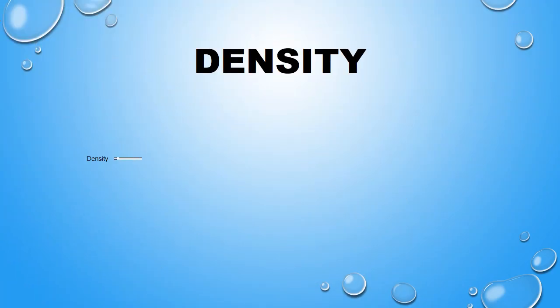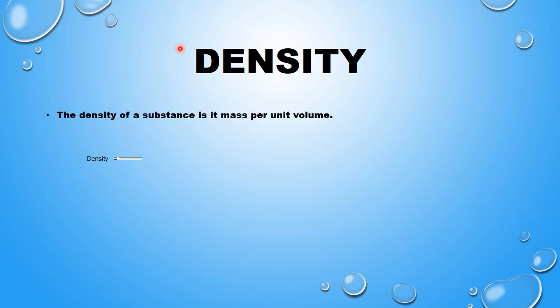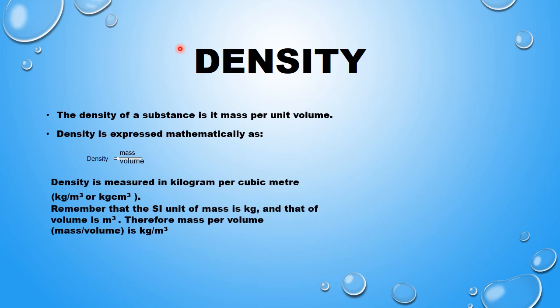Now we will look at density. Density is the mass per unit volume of a given object — for example, the density of a book is the mass of the book per unit volume of the book. Density is expressed mathematically as density equals mass divided by volume. Its SI unit is kilogram per cubic meter, or kilogram per cubic centimeter.